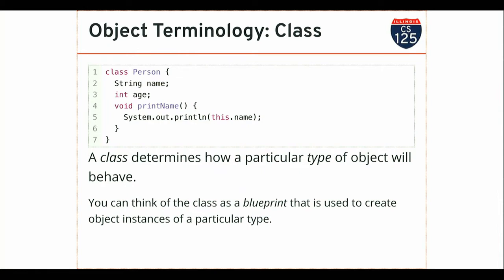So here I've decided that my Person is going to contain a name and an age. The way we design our classes is determined by what our program is trying to do. Every person I create is going to have these attributes. If I need to add more, I can. If I don't need as many, I can remove them. This is how I declare that my Person is going to have these attributes — I put in the type and then a name. This is very similar to a variable declaration.